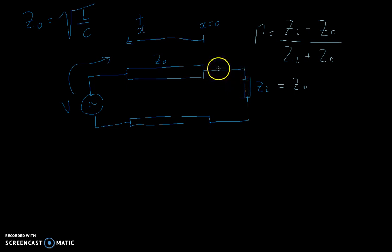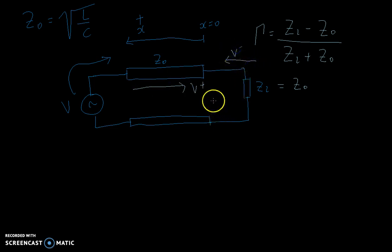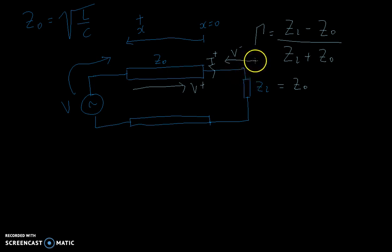Let's define some terms. We'll call the voltage leaving the driver and going forward V plus. When the voltage hits the load, we call the reflected voltage V minus. There is also a current flowing along the line in the forward direction — this is I plus. When the current hits the end and the voltage is reflected, there is a current going back, and we call it I minus.